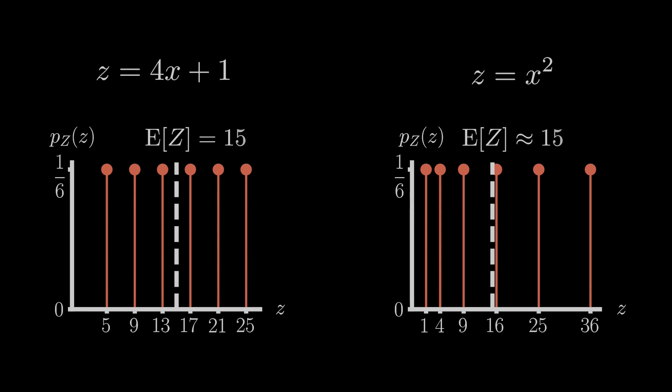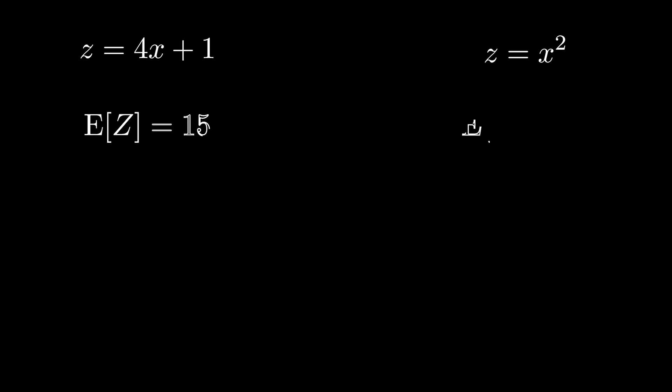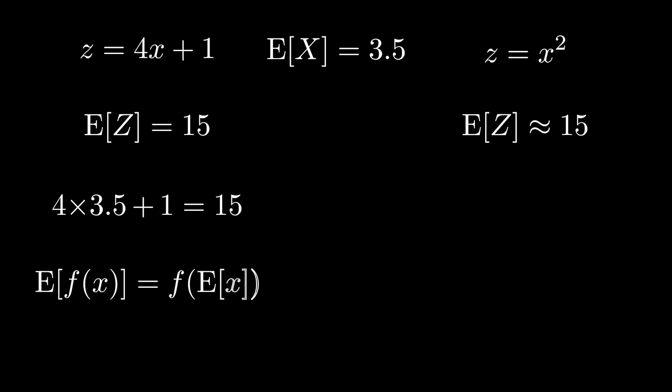Now keep in mind that, for both of these situations, the expected payout is $15. How does that compare to the result you would get if you simply plugged in our expected input value of 3.5 into our two equations? In the first case, 4 times 3.5 plus 1 equals 15, or put another way, the expected value of our output is exactly the same as plugging in the expected value of our input into our function. Average in yields average out.